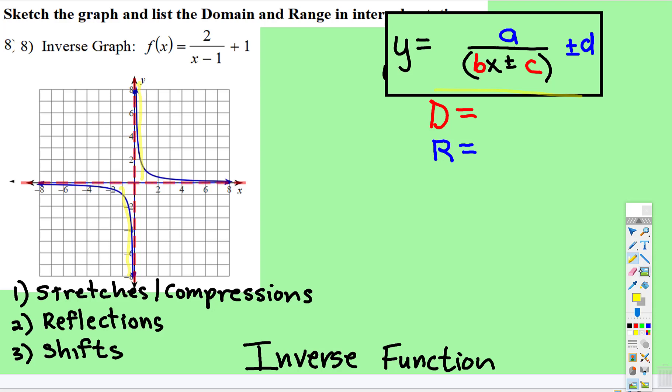So the normal domain and range is negative infinity up to zero, union zero to positive infinity. And then the range, same thing, negative infinity up to zero, union zero to positive infinity.